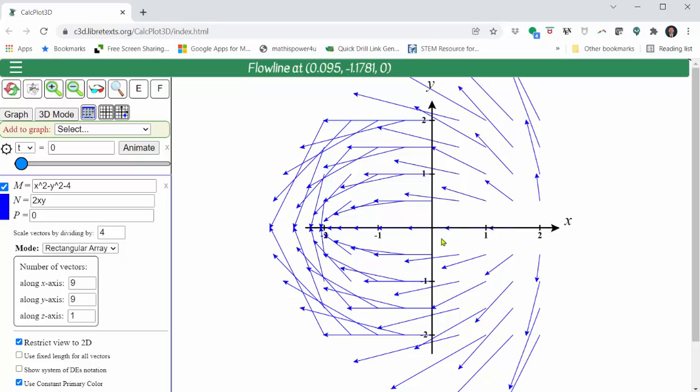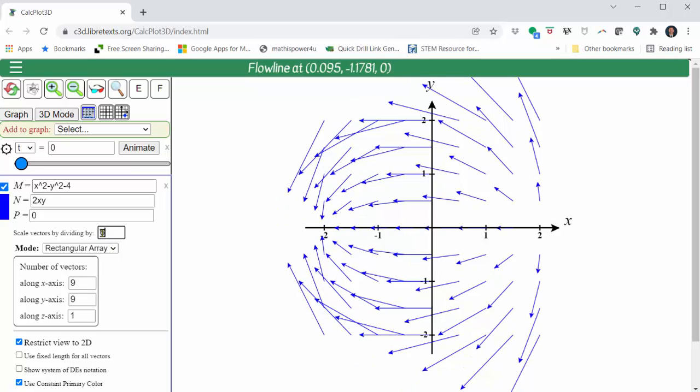This looks a little bit messy. Let's change the scaling by dividing by 6 to make the vectors shorter. Let's try 8. And now we have a nice graph of the given vector field.